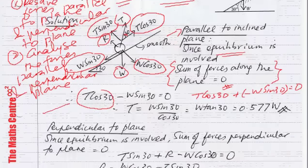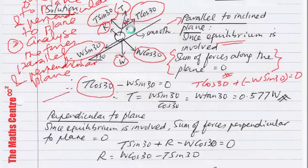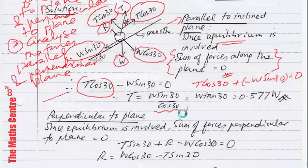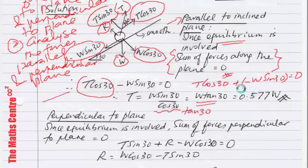We can make T the subject. Bring W sin 30 to the right, and you get T equals W sin 30 over cos 30. This is tan 30. Using a calculator, you get T equals 0.577W.